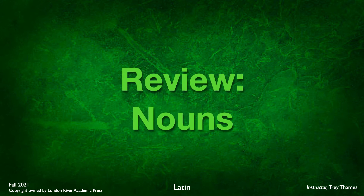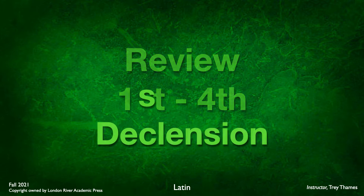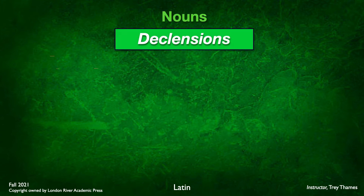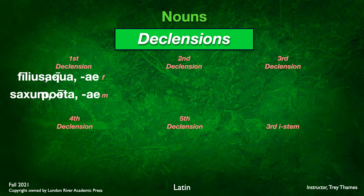By way of a quick review, thus far we have learned our first through fourth declension nouns. Here are some paradigm nouns we have looked at previously. We had our first declension, which had both masculine and feminine, but mostly feminine nouns — aqua, aquae, poeta, poetae were some examples.